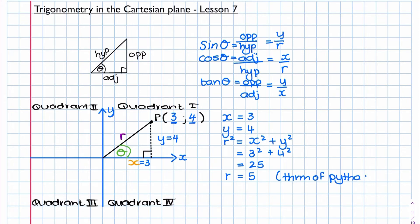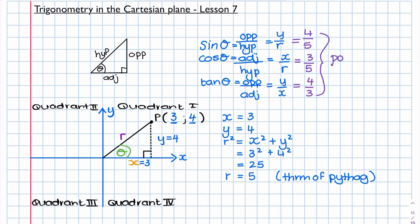Now we know x, y, and r, so we can work out all three trig ratios. Sine theta is y over r, which is 4 over 5. Cos theta is x over r, which is 3 over 5. Tan theta is y over x, which is 4 over 3. You'll notice all three answers are positive — this is extremely important. In quadrant one, all of the trig ratios are positive.